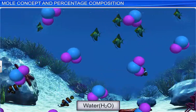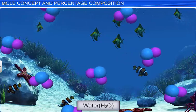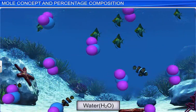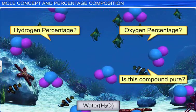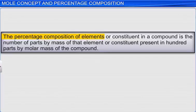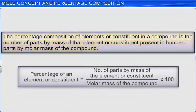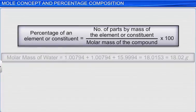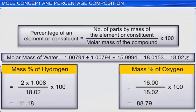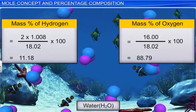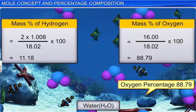Thus, we can conclude that the mass of one mole of any substance is equal to its molecular mass. At times, scientists also require to know the percentage of elements present in a compound. This information helps to determine the purity of the chemical compound under observation. The percentage composition of an element in a compound is the number of parts by mass of that element present in 100 parts by molar mass of the compound. We know that the molar mass of water is 18.02 grams, and we can calculate the percentage of hydrogen and oxygen. The percentage of oxygen and hydrogen in water is 88.79% and 11.18% respectively.